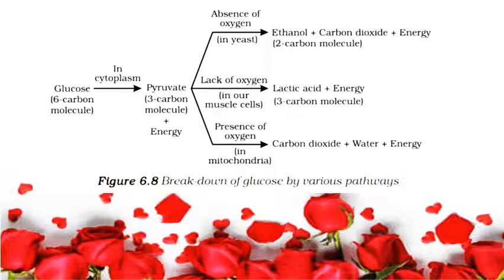Breakdown of pyruvate using oxygen takes place in the mitochondria. This process breaks up the 3-carbon pyruvate molecules to give three molecules of carbon dioxide. Since this process takes place in the presence of air, it is called aerobic respiration.